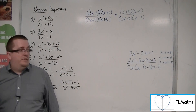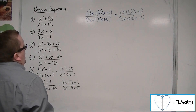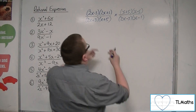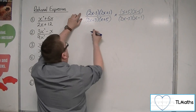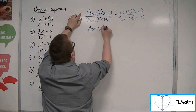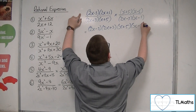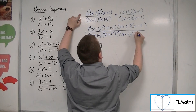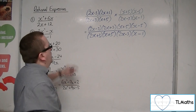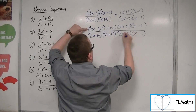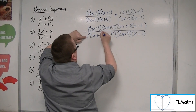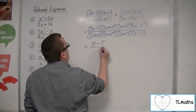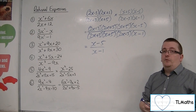Now that I've factorised everything, I can start cancelling. When you have one fraction multiplied by another, the numerators multiply together and the denominators multiply together — it's just one big fraction. So that's 2x minus 3 times 2x plus 3 times x plus 5 times x minus 5 over the denominator terms. I can cancel 2x minus 3, 2x plus 3, and x plus 5. So I'm left with x minus 5 over x minus 1. Number 5 simplifies to just x minus 5 over x minus 1.